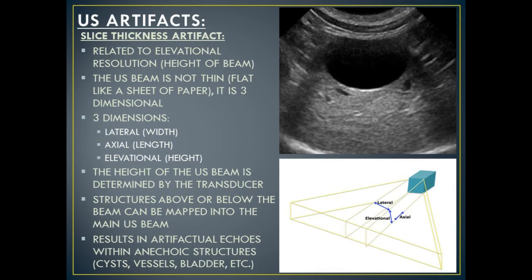Slice thickness artifact is related to elevational resolution, which is the height of the ultrasound beam. The ultrasound beam is not thin or flat like a sheet of paper — it has three dimensions: the lateral dimension (the width), the axial dimension (the length), and the elevational dimension (the height). The height of the ultrasound beam is determined by the transducer. Structures above or below the beam can be mapped into the main ultrasound beam, resulting in artifactual echoes within anechoic structures such as cysts, vessels, and the bladder.